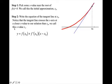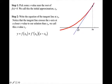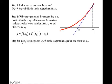Notice that the tangent line crosses the x-axis at a closer x-value to our solution than x₀. We call this x-value x₁. So here is x₁. Step three: find x₁ by plugging in (x₁, 0) to the tangent line equation and solve for x₁.